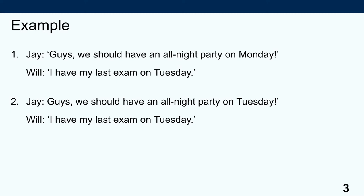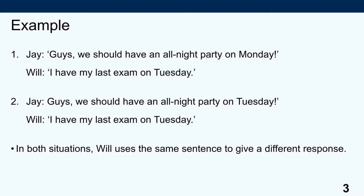So in both situations here, Will uses the same sentence to give a different response. In situation one, where the party will be on Monday but the last exam on Tuesday, you will probably have inferred that Will is not so keen on the idea of having a party because he has his last exam on Tuesday. However, in response two, where they cover the same day, you might get the sense that Will is quite excited about the idea because it coincides with his last exam and he will probably have something to celebrate. So sentences can convey different meaning depending on the context in which they occur.